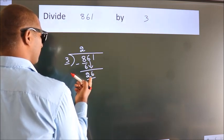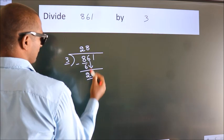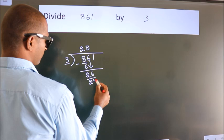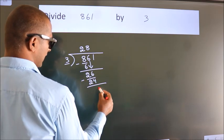A number close to 26 in the 3 table is 3 times 8, which is 24. Now we subtract, we get 2.